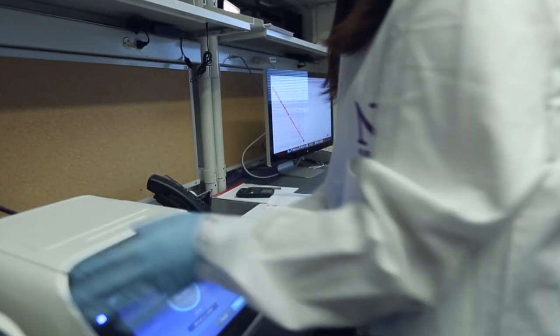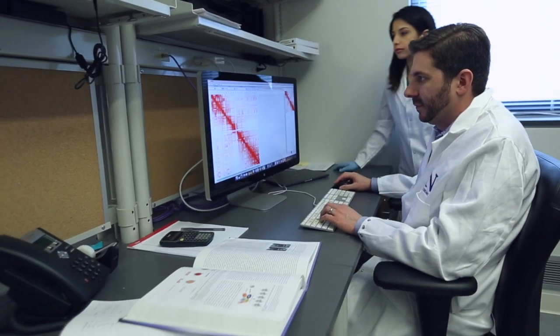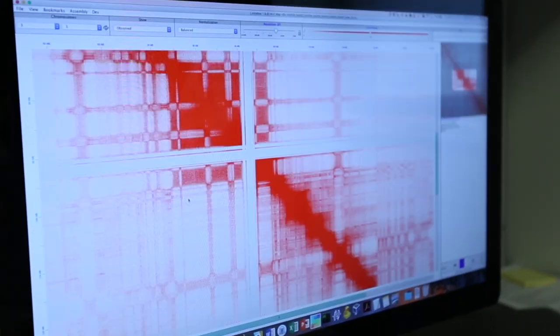Then we use the power of next-generation sequencing to map what DNA strands are next to each other in a cell. We do this in a very high-throughput fashion. We'll be collecting billions of data points at once.